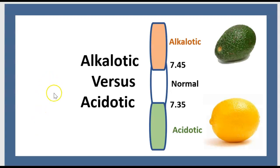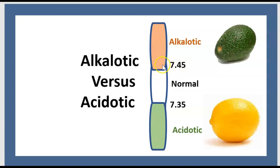A reminder of pH: normal pH is between 7.35 and 7.45. Above 7.45 it's alkalotic, and below 7.35 it's acidotic.